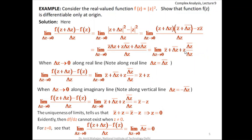For z = 0, returning to the expression z̄ + z·(Δz̄/Δz) + Δz̄: at z = 0, z̄ = 0, so the expression reduces to the limit of Δz̄ as Δz → 0. For any path, as Δz → 0, Δz̄ also → 0, so this limit is always 0 and is unique. Therefore the derivative exists at the origin and equals 0. This is a function where the derivative exists at only one point.